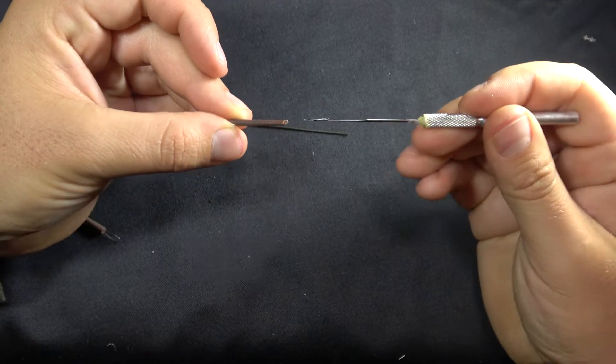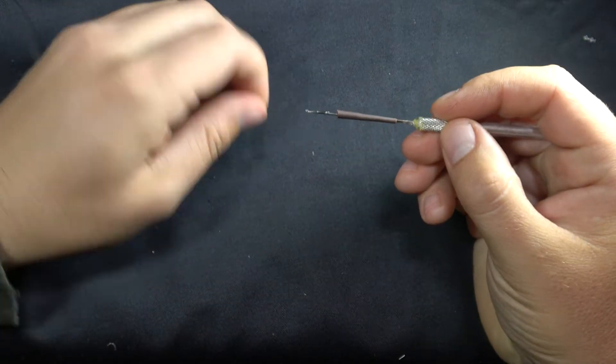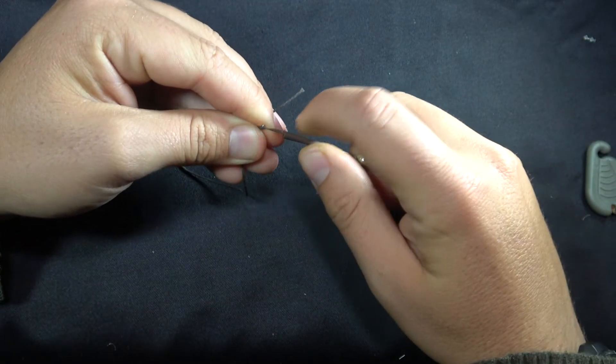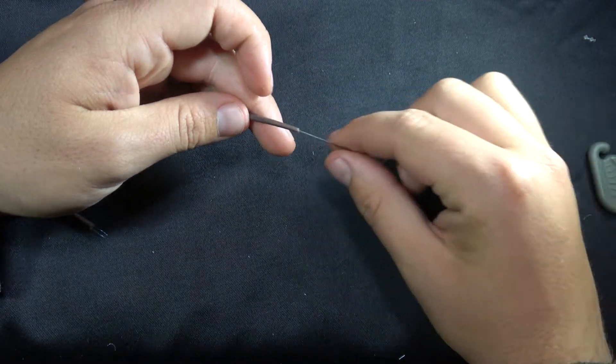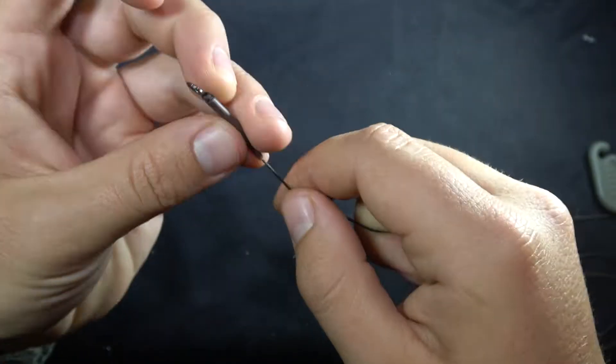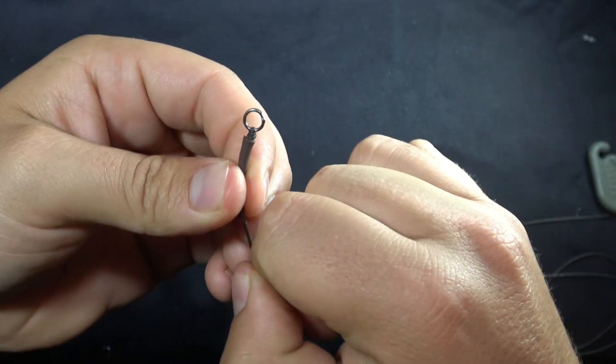Next step, get your anti-tangle sleeve and slide it onto your boilie needle. Slide your anti-tangle sleeve onto your lead free. Push your anti-tangle sleeve all the way down and slide it over the knot.